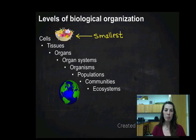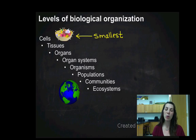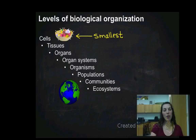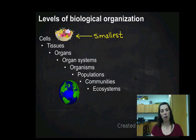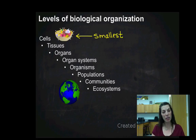Tissues group together to form organs. Organs group together to form organ systems. When you have several different organ systems present working together, they form organisms — individual living creatures. When we have a group of organisms of the same type living together in the same place, we call that a population.